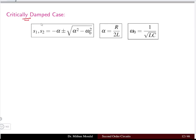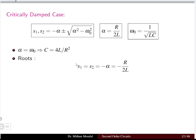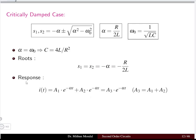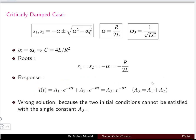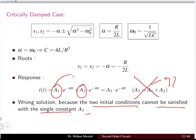For the critically damped case (α = ω₀), the capacitor value equals 4L/R². The roots are equal: s1 = s2 = -α = -R/(2L). One might think to write i(t) = A₃e^(-αt) where A₃ = A₁ + A₂, but this solution is wrong — two initial conditions cannot be satisfied with a single constant A₃.